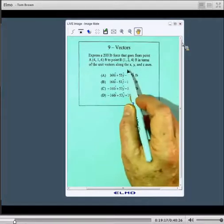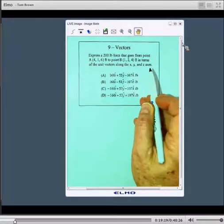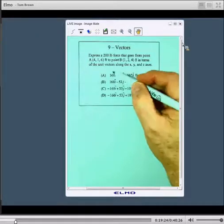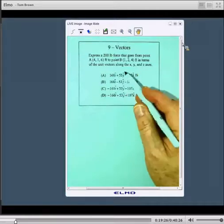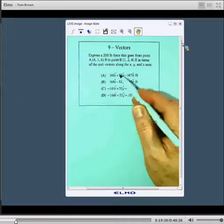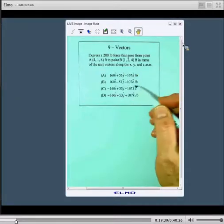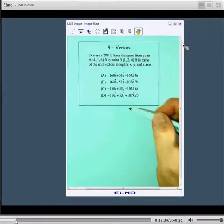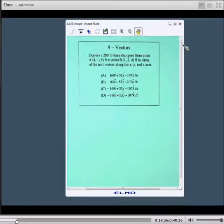Sometimes they may not tell you according to IJK, but that's what the unit vectors are. Your answers are plus or minus 160, plus or minus 53, plus or minus 107. Not worried about the number, but worried about the sign with your terms.